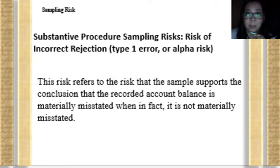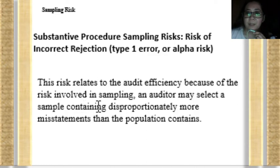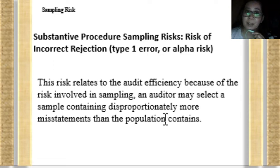That is why it is only considered to be type 1 error — a lesser risk on the part of the auditor. He rejected the fairness of the items. This risk relates to audit efficiency; the auditor will not be efficient because he will do more substantive procedures to gather more audit evidence when, in fact, he could do less. But because he wrongfully assessed, based on the result of the sample, the item as materially misstated, it resulted in that conclusion.